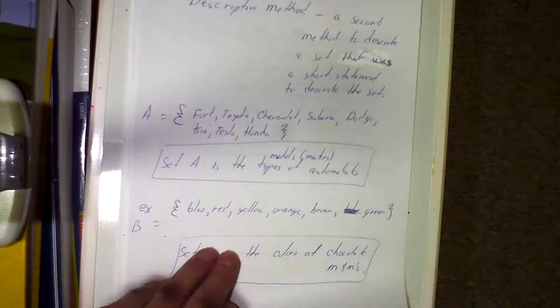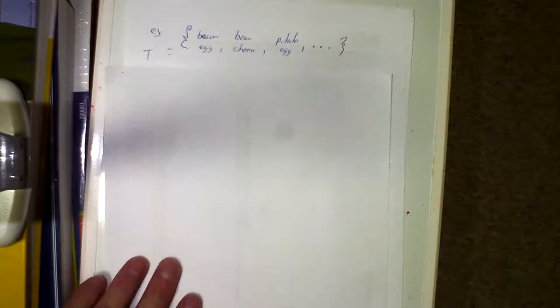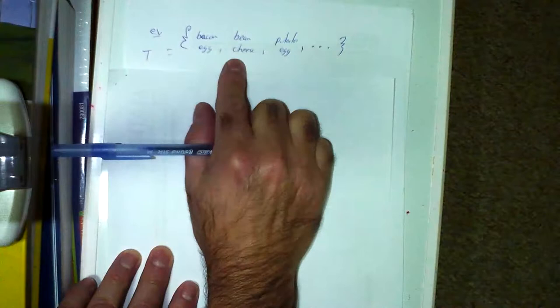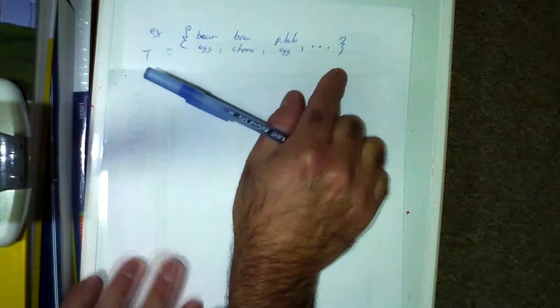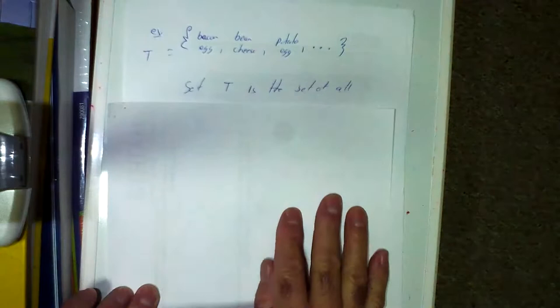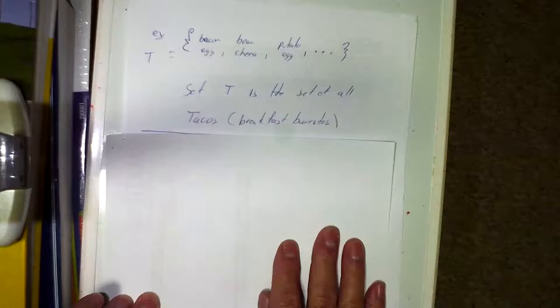Next: if T equals {bacon egg and bean, cheese potato and egg, …}, what am I describing? Set T is the set of all tacos — or as they call them up north, breakfast burritos. Here in San Antonio they're called tacos. We're using statements to describe the set.